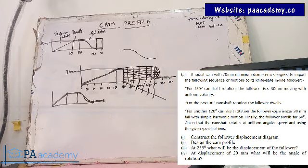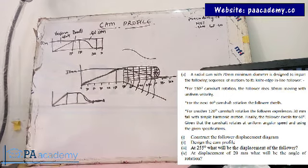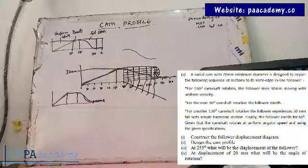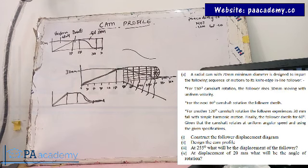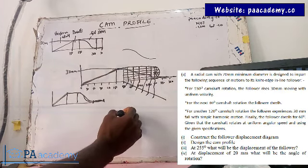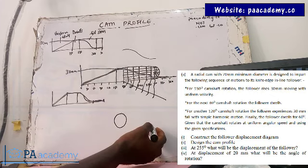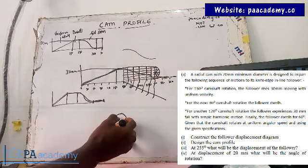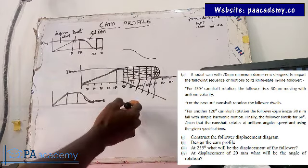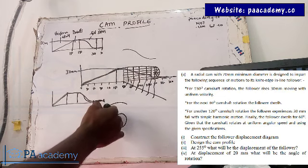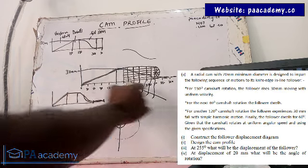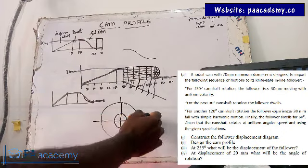Now let's go to question two, which is to design the cam profile. If you check page 55 of the manual, everything is there. To start with, the question says it has a 20mm minimum diameter — that is the base circle of the cam. So you draw the first circle with a radius of 10mm (diameter 20mm). The total rise is 30mm, so you add that to get a radius of 50mm, and draw another circle with a radius of 50mm. The next thing is to divide your circle into 12 equal parts of 30 degrees each.